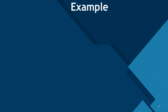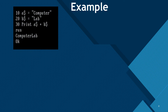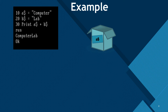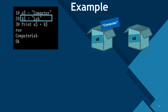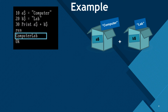Two operations can be applied to string variables: the first is concatenation and the second is comparison. For the concatenation operation, take string variable 'a$' which stores 'computer' and string variable 'b$' which stores 'lab'. When we apply the concatenation operation — the plus sign represents concatenation for string variables — it will give us a result as a combined string.